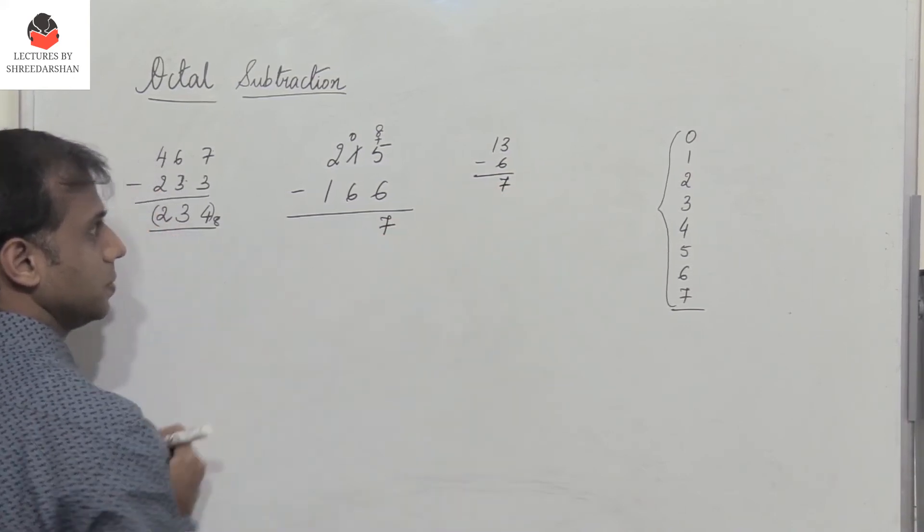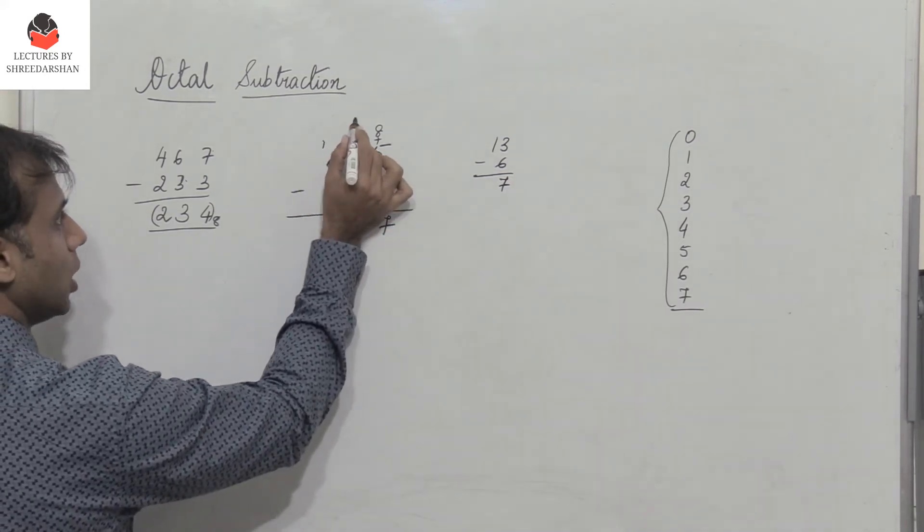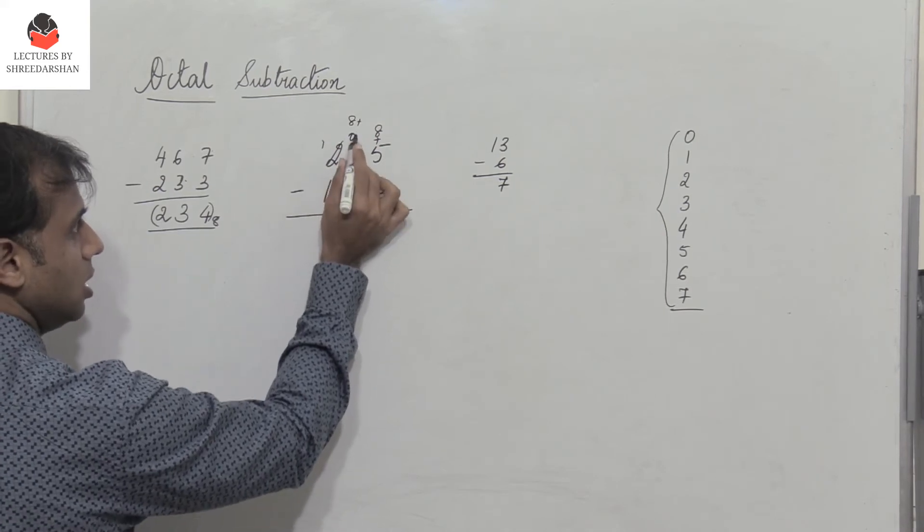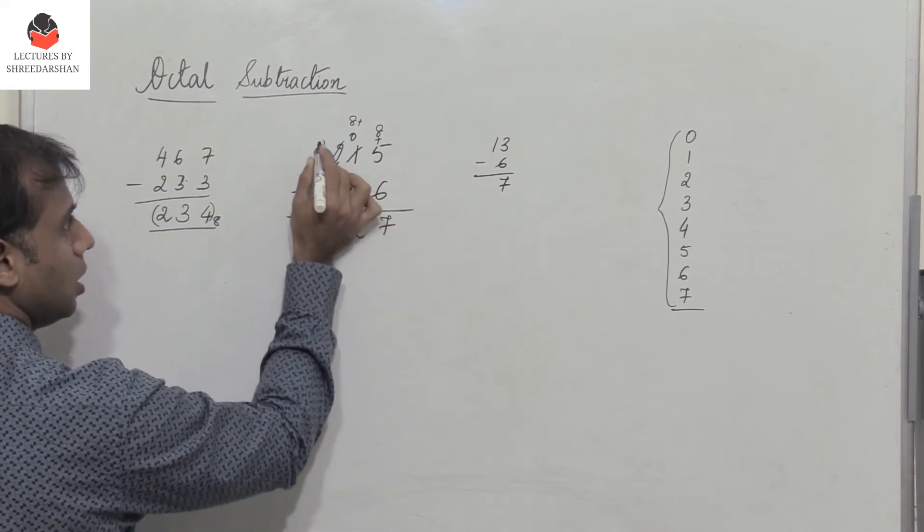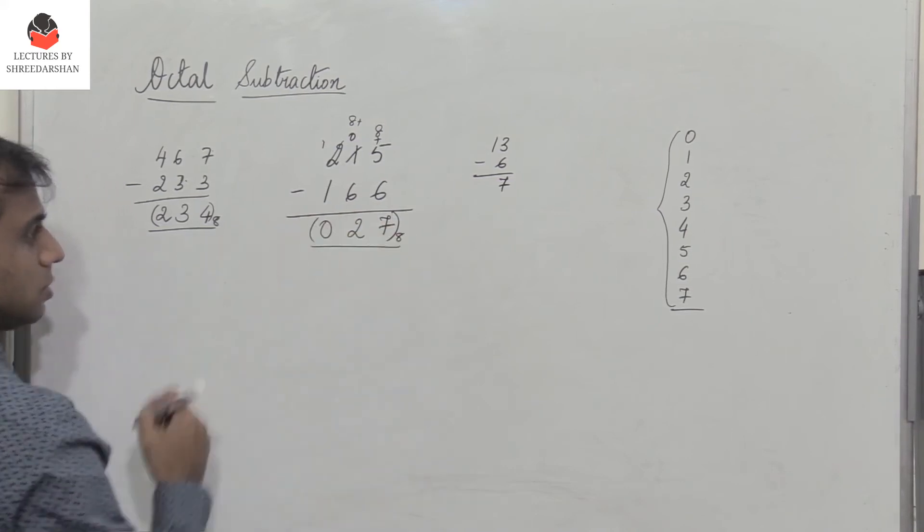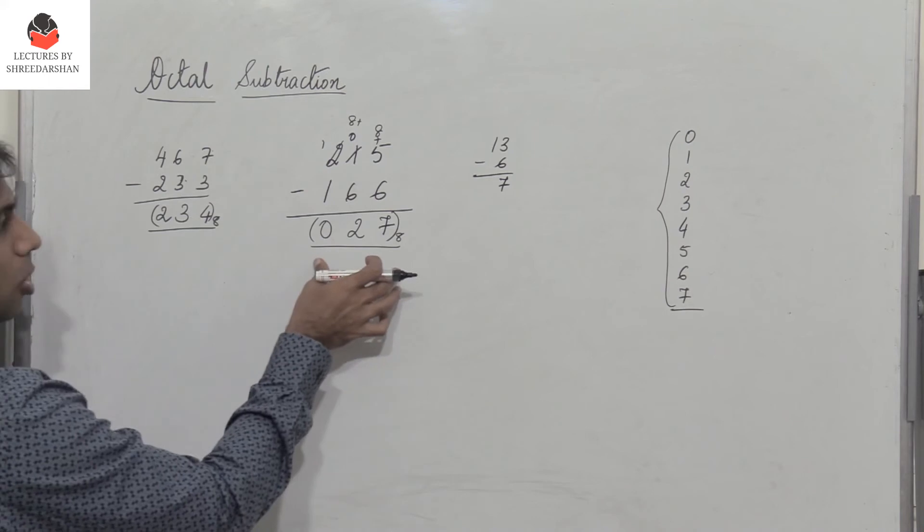So again here, I need a borrow. So this becomes 1. So I add 8 to 0. So 8 plus 0 is 8. So 8 minus 6 is 2. 1 minus 1 is 0. So this is the answer. So 215 minus 166 equals 027. So this is how we perform octal subtraction.